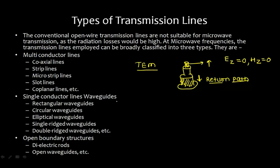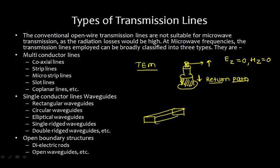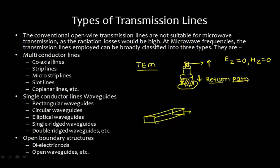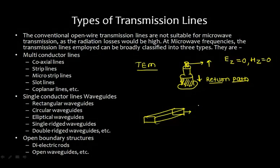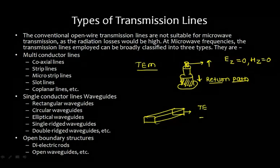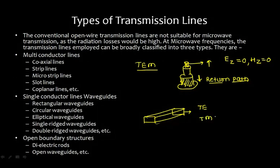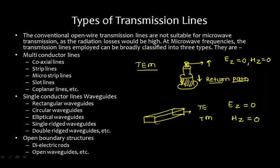For single conductor lines — for example, a rectangular waveguide — you have only one conductor filled with a dielectric material such as air. In this case, you don't have a well-defined return path, so it supports either TE mode, where Ez = 0, or TM mode, where Hz = 0.